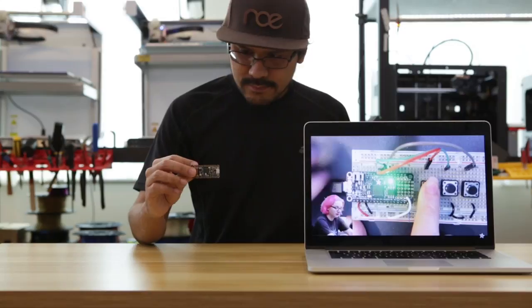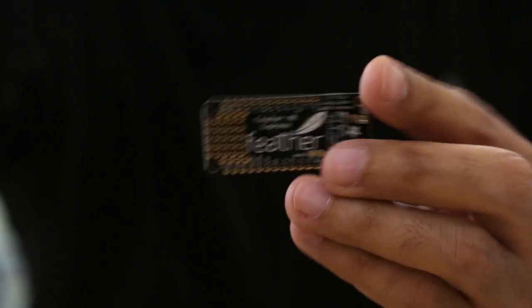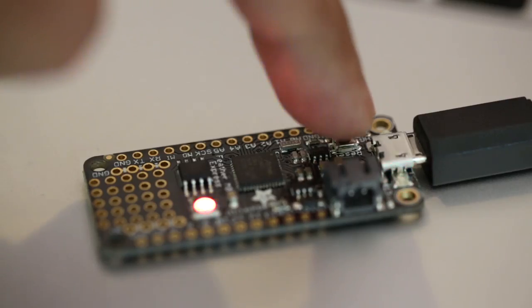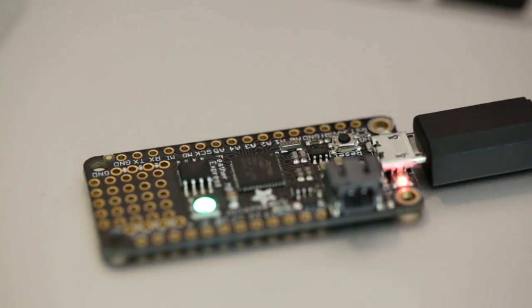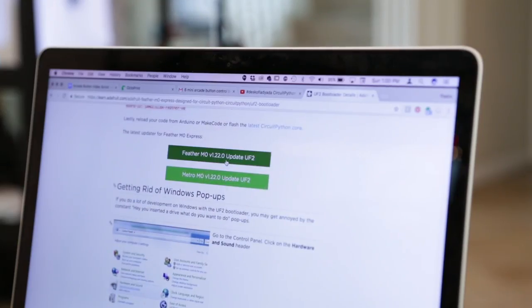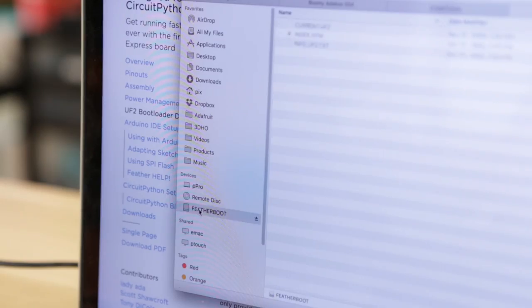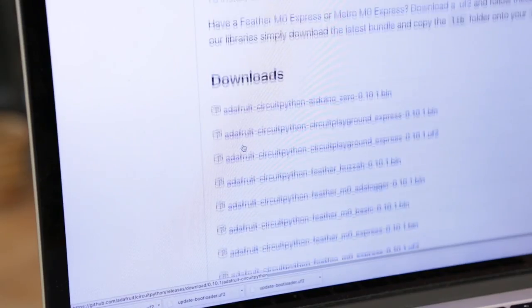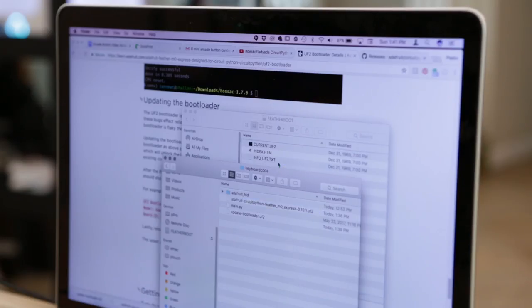Programming the Adafruit Feather with CircuitPython is fairly straightforward and relatively easy to do. Simply double press the reset button and drop a UF2 file to flash the firmware. The board shows up as a USB storage device, then simply drop your main.py file with accompanying libraries and off we go.